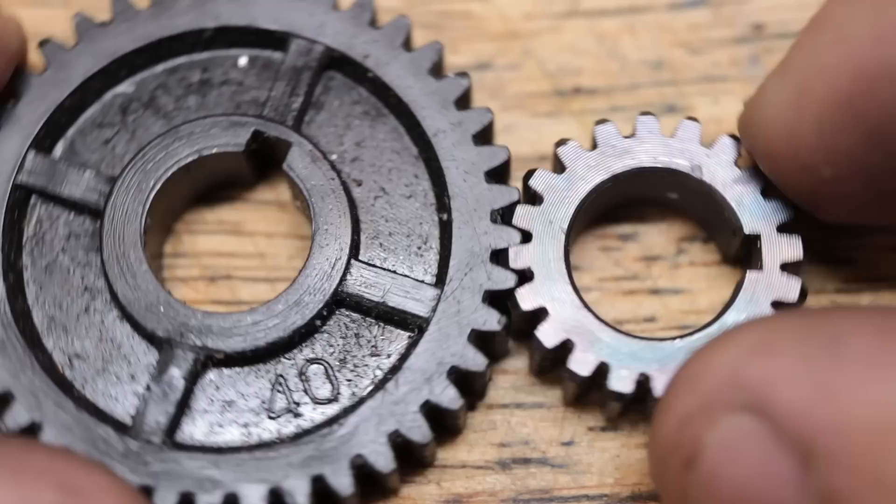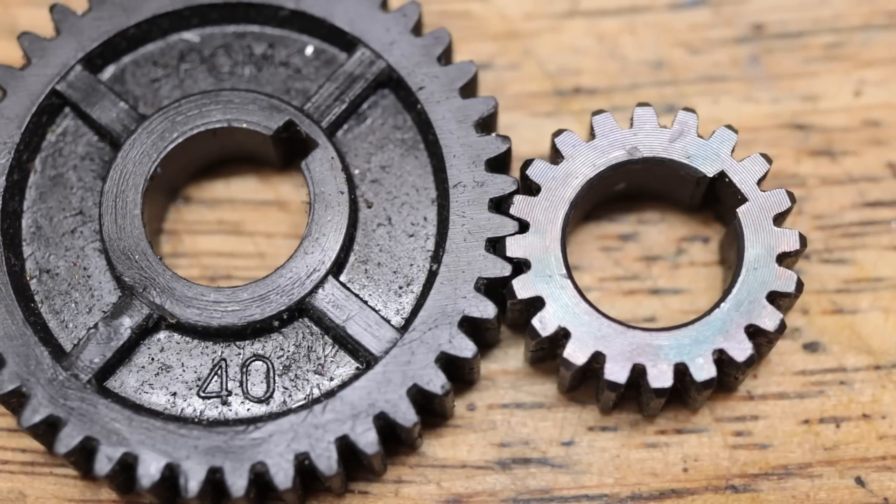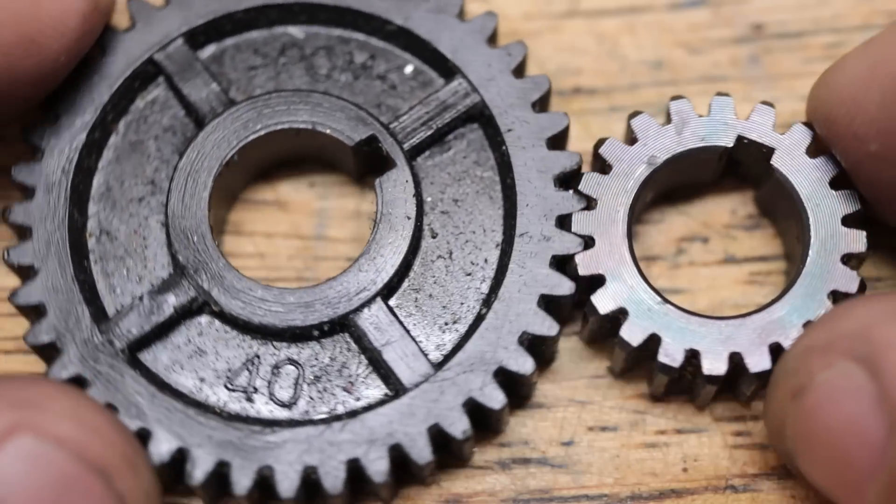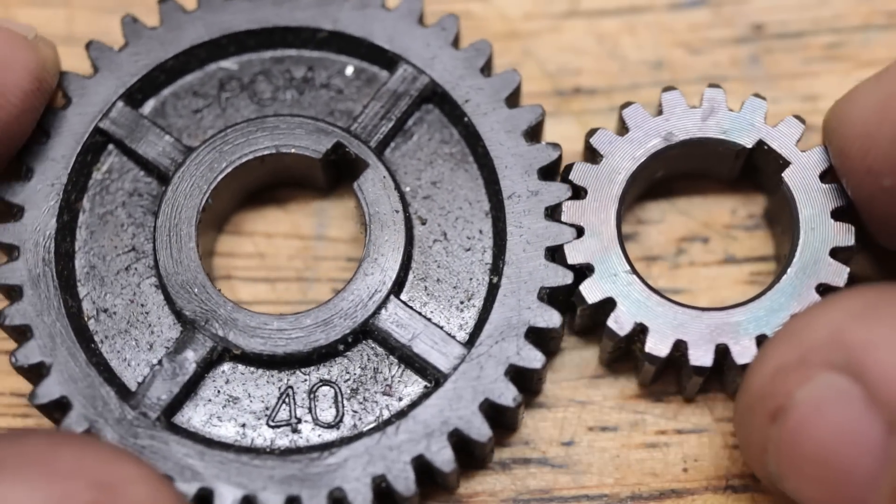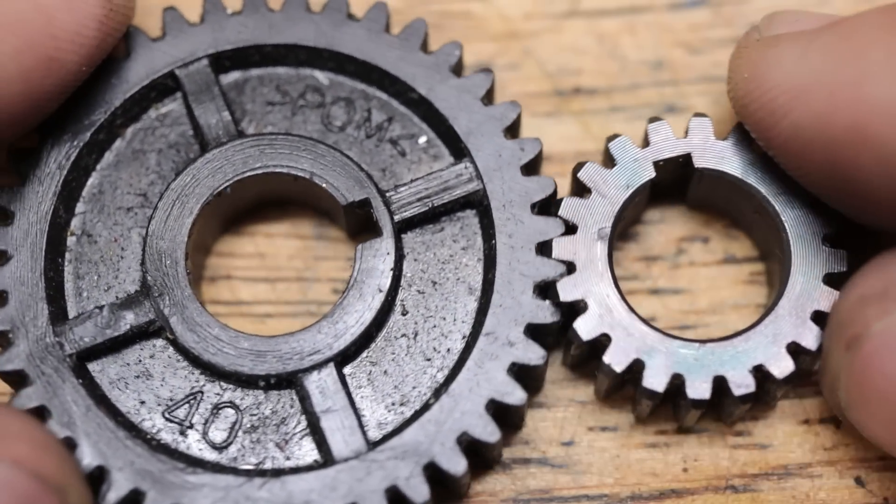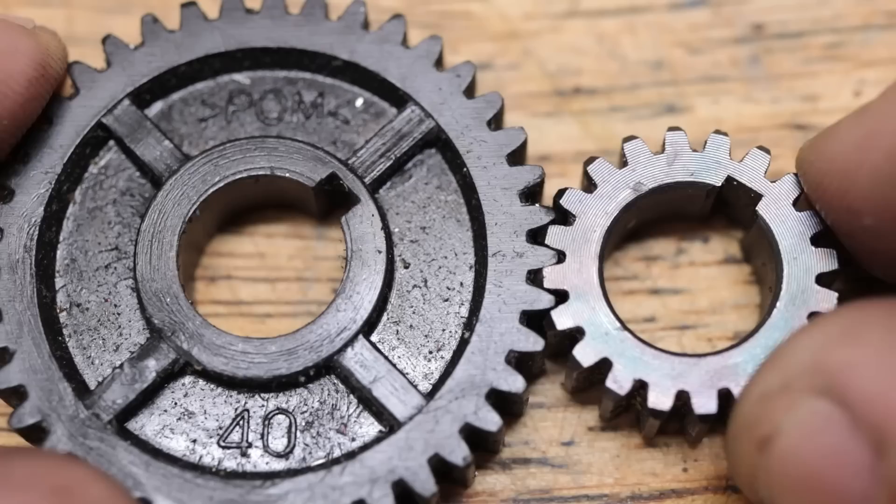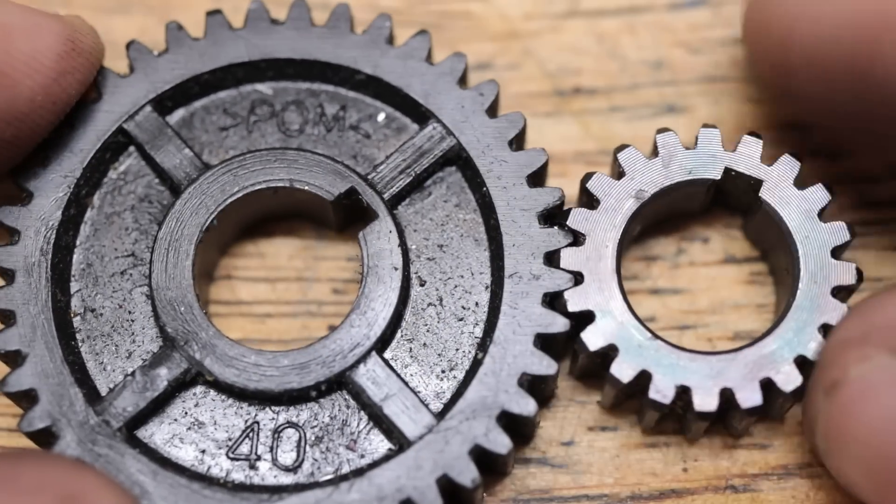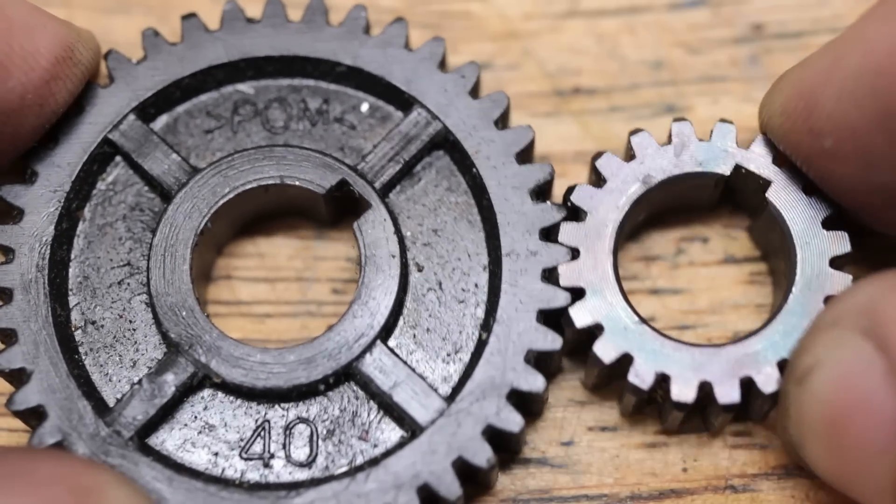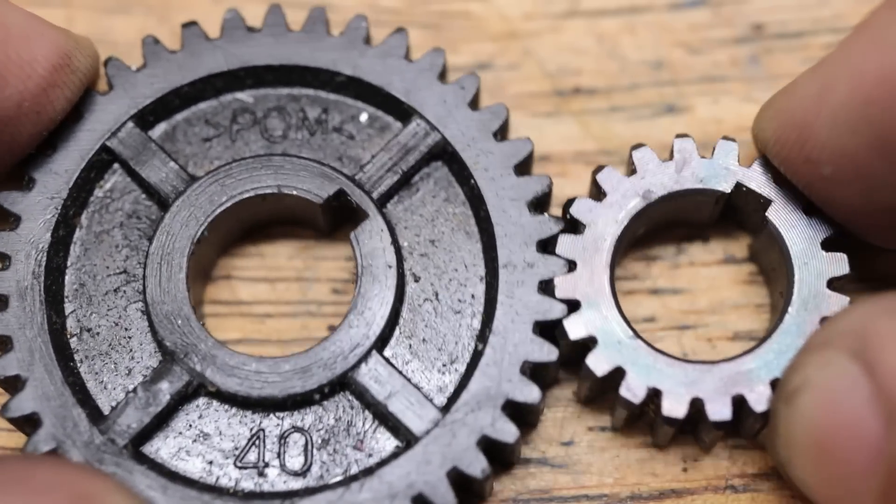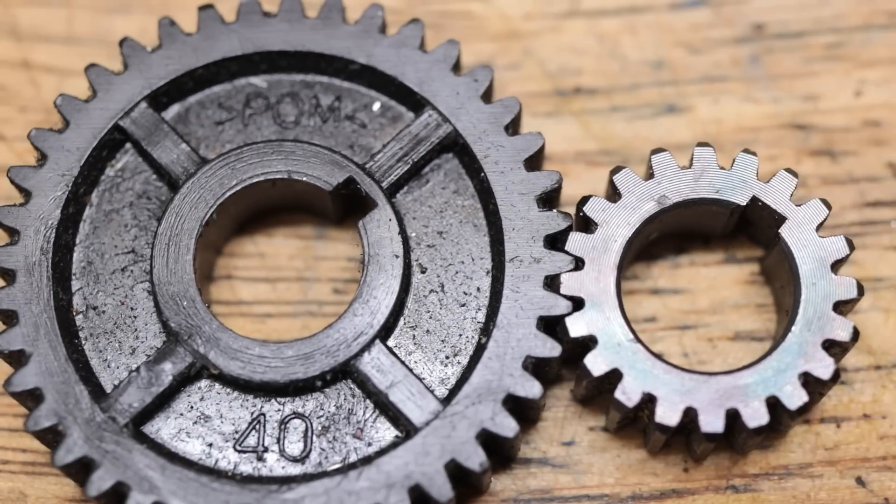If you think about it, there's going to be a lot of wear on the face of each tooth as they come into contact and mesh with each other, so those are going to be the places where you're going to see the most wear. So if we're able to harden the faces of each tooth, we can extend the working life of the gear whilst not worrying too much about hardening the inside.